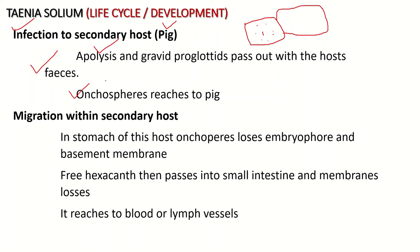The oncospheres migrate into the body of the secondary host, first going to the stomach. In the stomach, the oncospheres lose the embryophore and basement membrane due to the action of acidic juice, these layers are dissolved. The pre-hexacanth then passes into the small intestine.